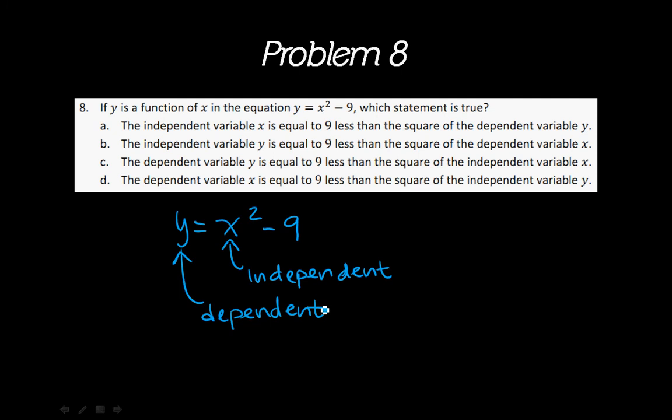So if you look at, for example, choice B, it says the independent variable y. Is y independent? And the answer is no, it's dependent. So B can't be the right answer because it says that wrong. Same thing with D. It says the dependent variable x. Well, x is not dependent. It's independent. So that rules out choice D. So you're left deciding between A and C.